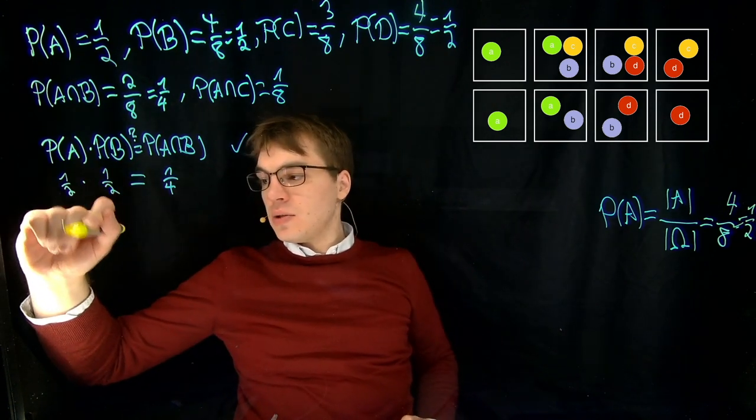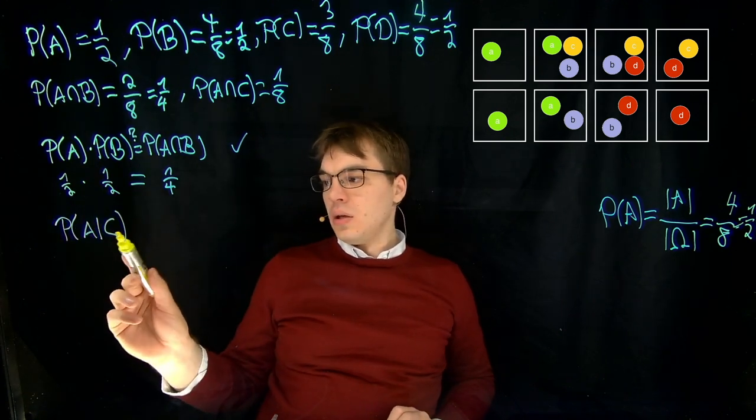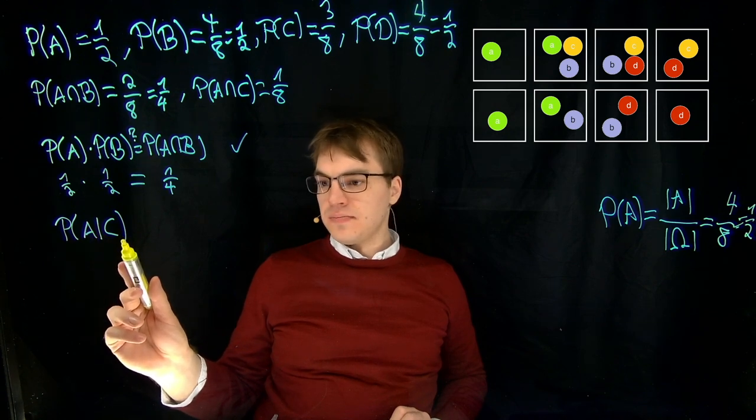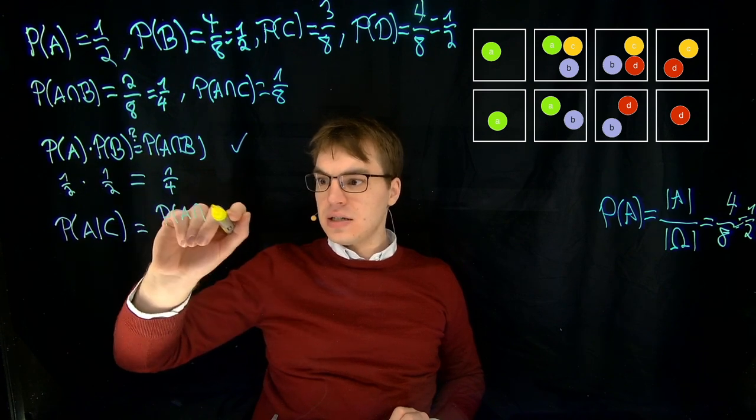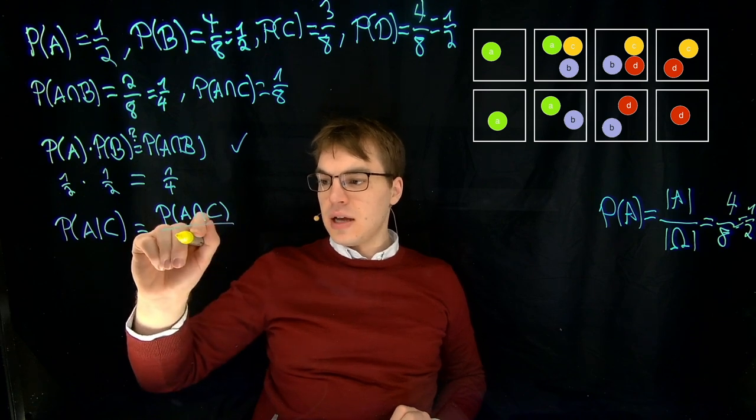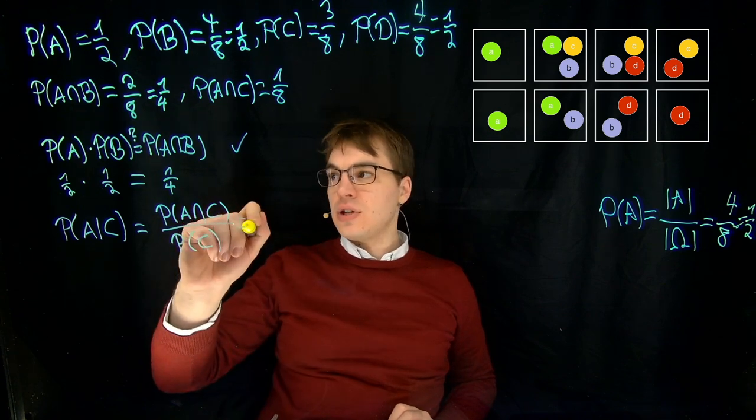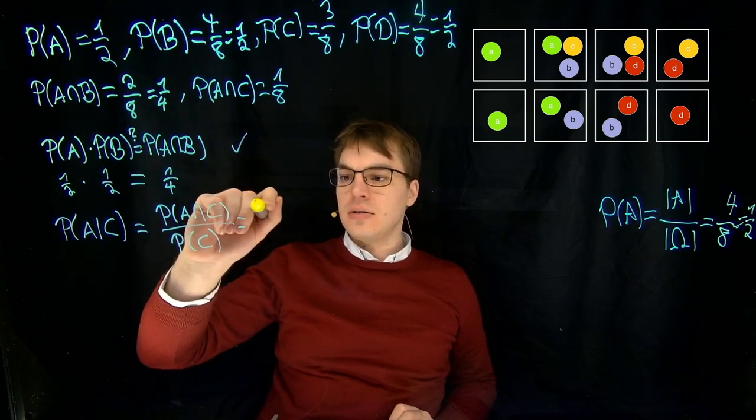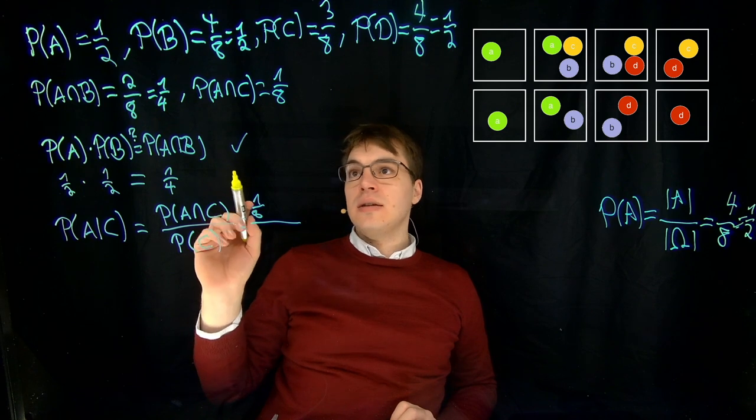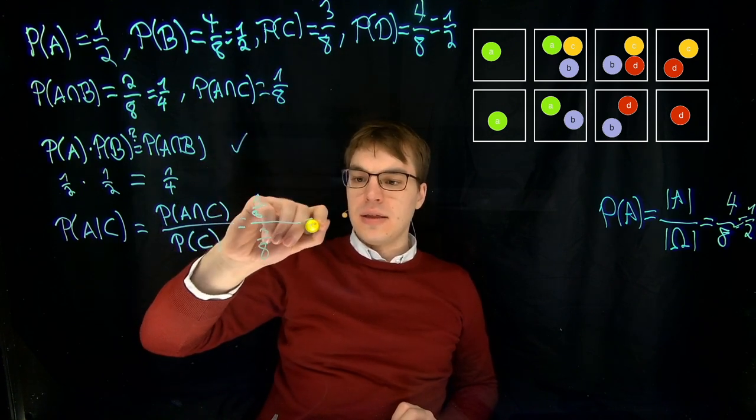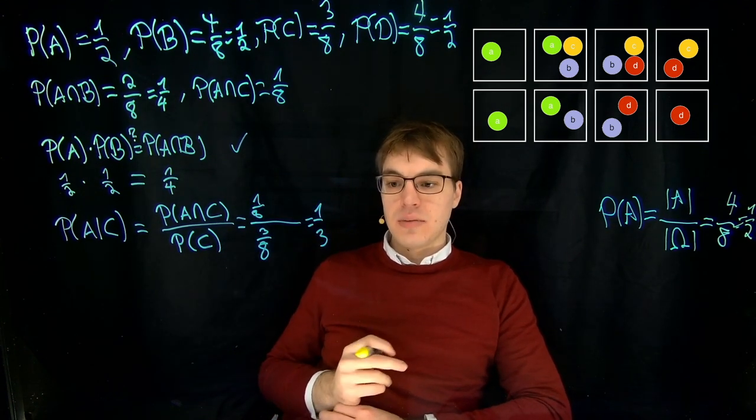So for the next step, let's compute the conditional probability. Probability of A given C can be computed as probability of A and C, like intersect, divided by the probability of C. And if we just fill this in, we did this already here, one divided by eight, divided by the probability of C. Got that over here, three divided by eight. And this is one third. And the others can be computed similarly.